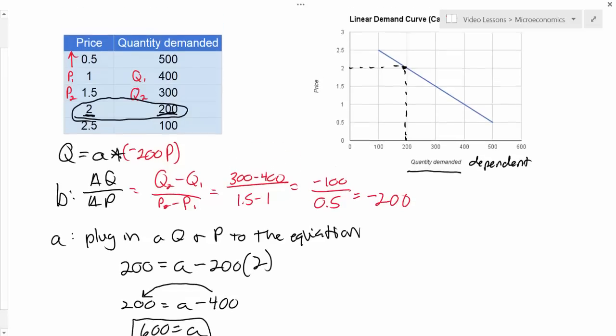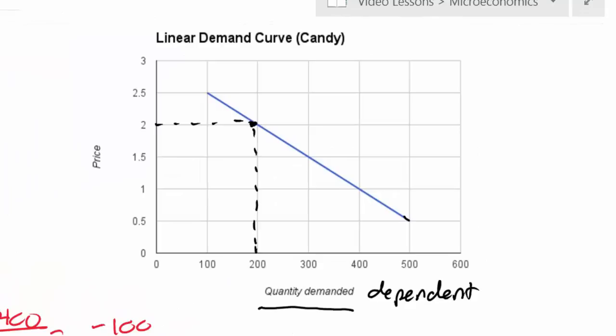And that would have been pretty easy to determine, actually, because I can see right here that if I were to continue this demand curve down, down to a price of zero, the quantity demanded is 600.